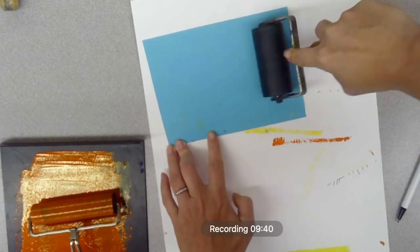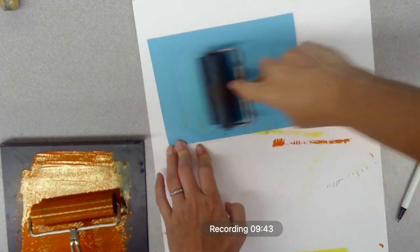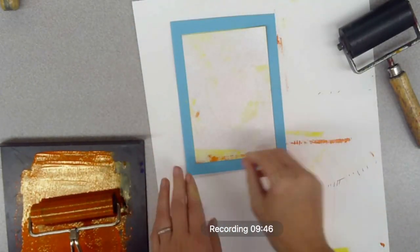Once I feel good, flip it back over, peel that styrofoam off, and you'll see what two layers of color look like for your print.